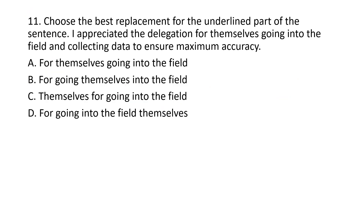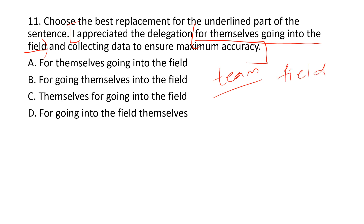The eleventh question asks us to choose the best replacement for the underlined part of the sentence: 'I appreciated the delegation [underlined] for themselves going into the field and collecting data to ensure maximum accuracy.' The delegation team went to the field on their own to collect accurate data. Options like 'for going themselves' are grammatically wrong. The correct replacement is 'for going into the field themselves,' meaning they went on their own.